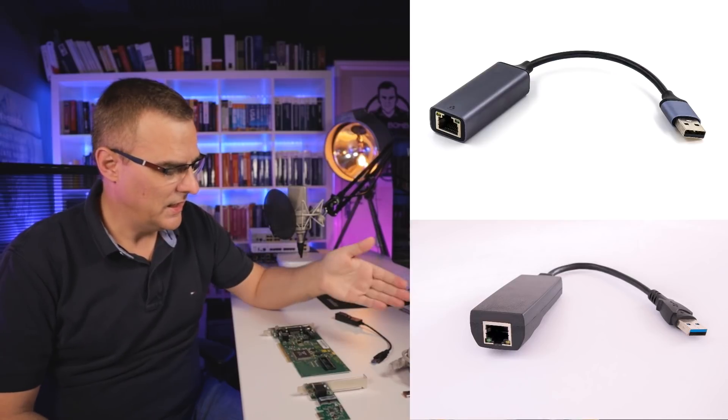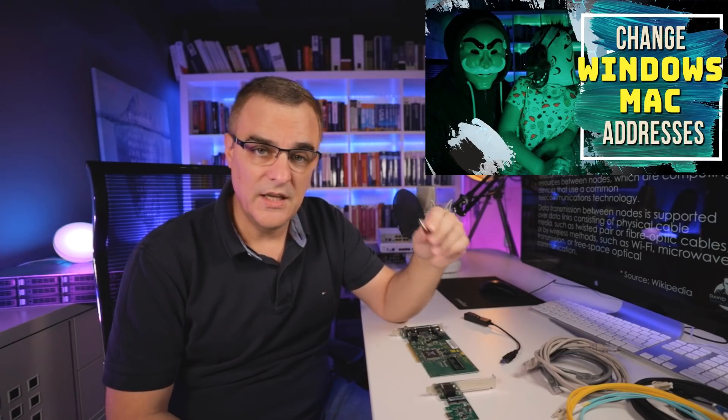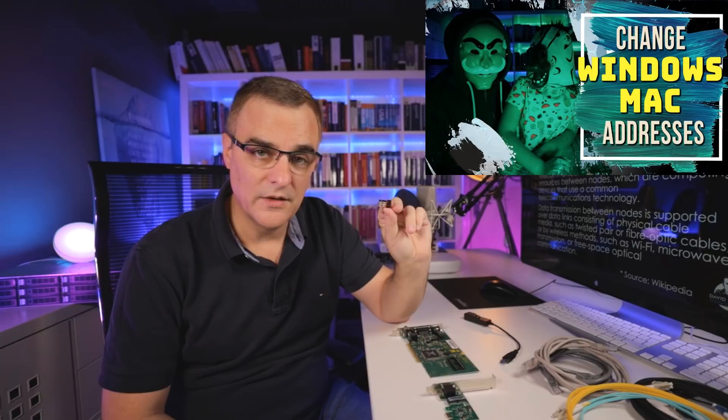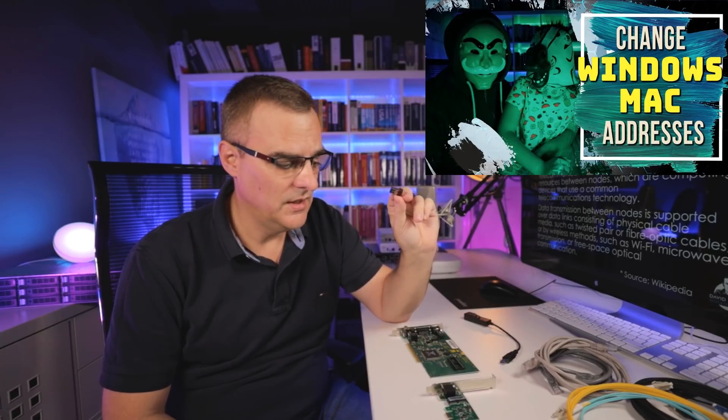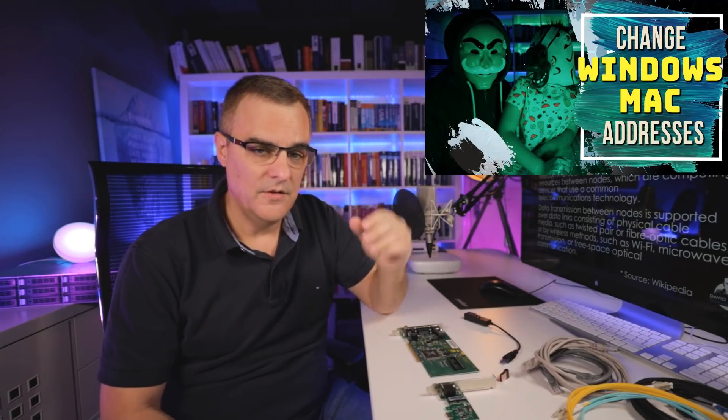So that would allow you to connect to the network using Ethernet, or once again, using wireless. Here's an example of a wireless network interface card. You essentially need a way to get a node onto the network, and a network interface card is the way that you connect yourself to the Ethernet network.